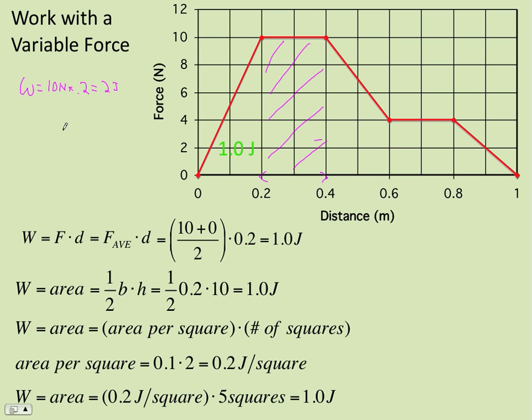How about the area idea? Well, it's the area of a rectangle. It's going to look the same, right? The area is the height times the width. And so you've got 10 newtons times 0.2 meters. And that comes out to 2 joules. If you want to do the area per square, we have now 10 squares. And so the area is 0.2 joules per square times 10 squares, and 2 joules. So that part is 2 joules.